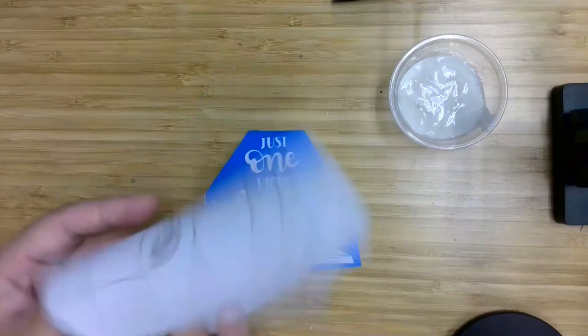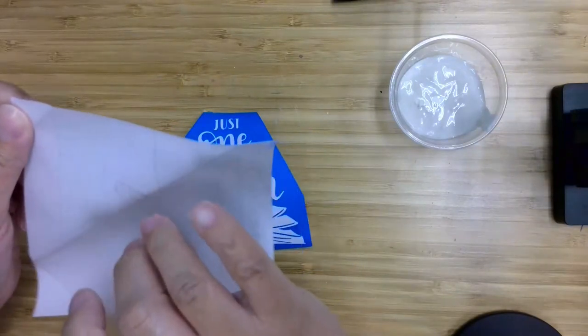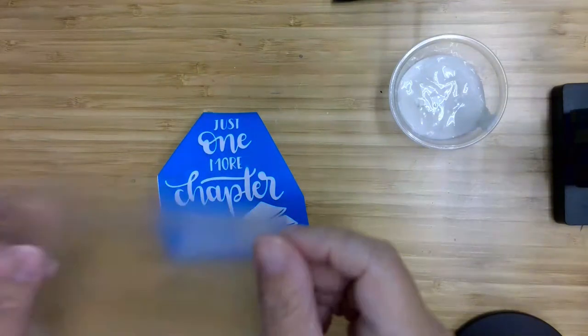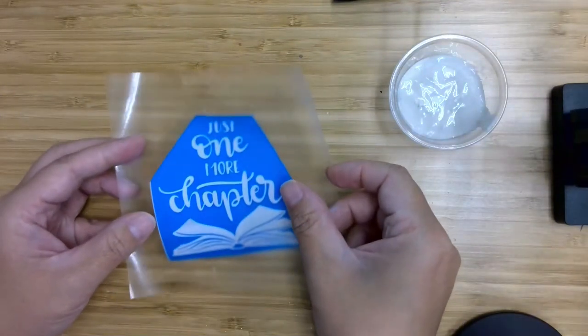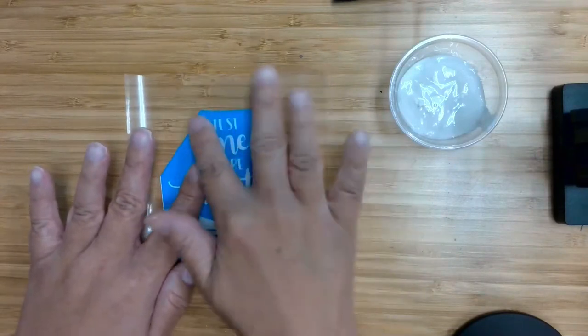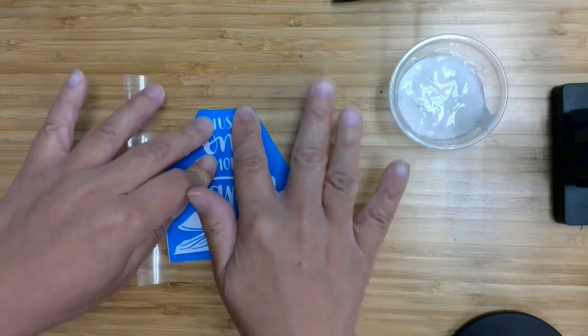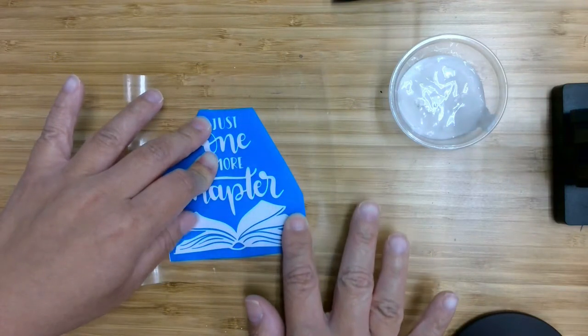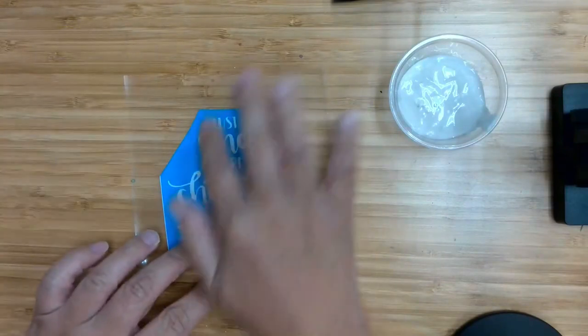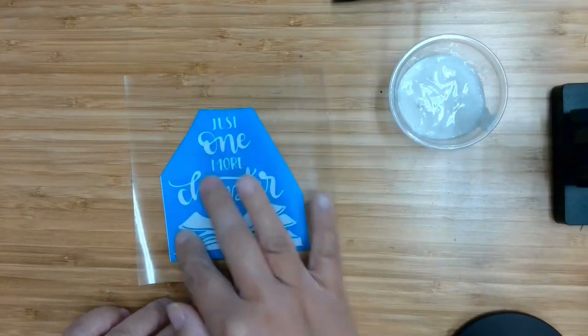So just peel it back and cover your stencil. Make sure you don't have any bumps, and you want to rub it to make sure that all of the blue vinyl gets stuck to the transfer paper. So everything that's blue should come up with the transfer paper.